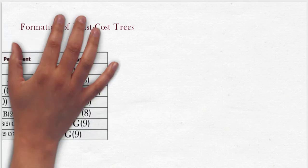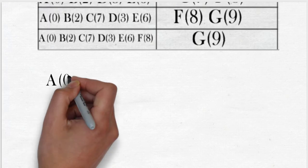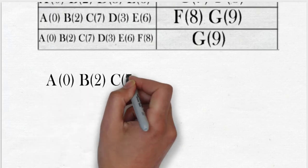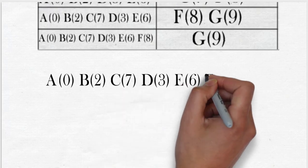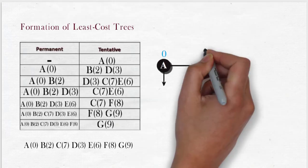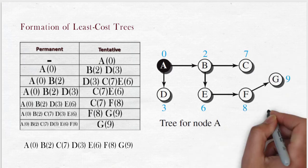At last, we have least cost estimation from source node A to other nodes in the network: A is 0, B is 2, C is 7, D is 3, E is 6, F is 8, and G is 9. From following cost and links, the least cost tree is made for node A.